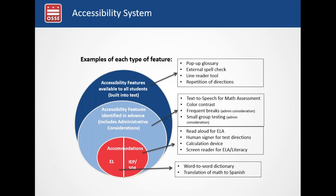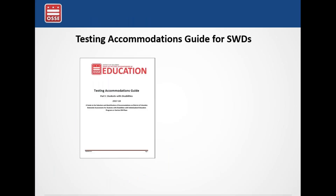For English learners, the word-to-word dictionary and translation of math to Spanish are additional examples. A follow-up email will include the testing accommodations guide: part one for students with disabilities — the 2017-2018 date still applies, with updates to student registration — and part two for students who are English learners, since some students are dually identified.